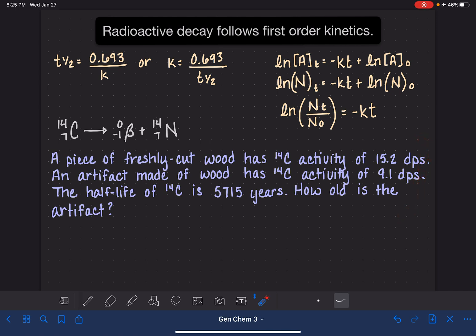So let's look at an example of how we could use these equations. This problem is saying that if we have a piece of freshly cut wood, so this is just cut right off a living tree, that freshly cut wood contains carbon-14. And remember, carbon-14 is undergoing spontaneous radioactive decay at a rate of 15.2 DPS. That stands for disintegrations per second. This is standard notation for radioactive decay.